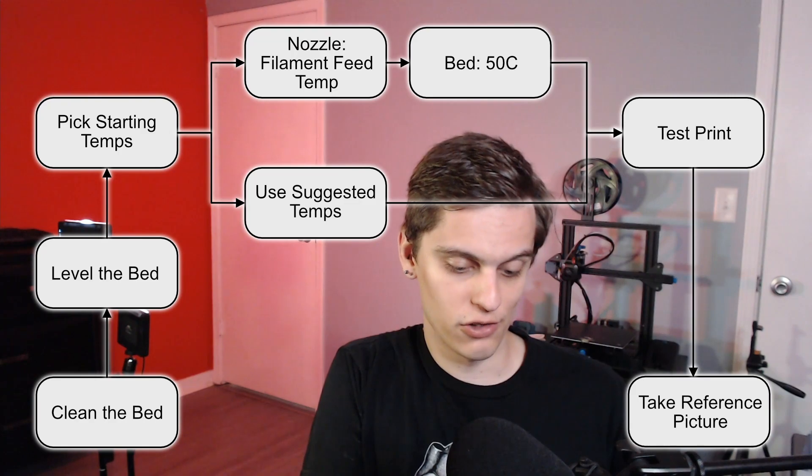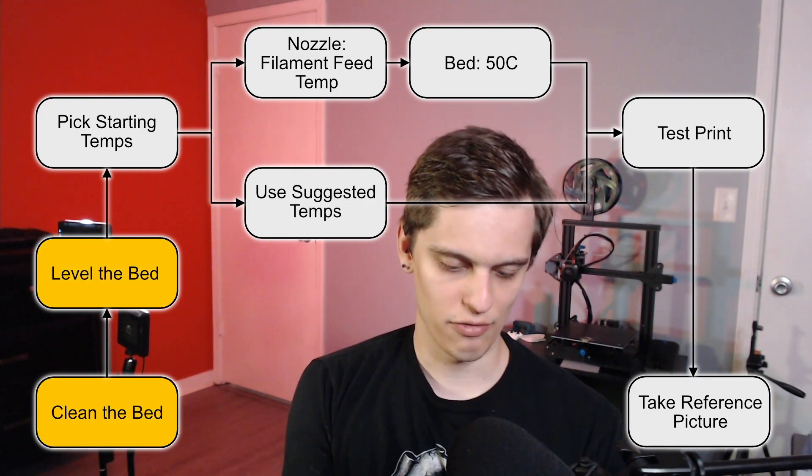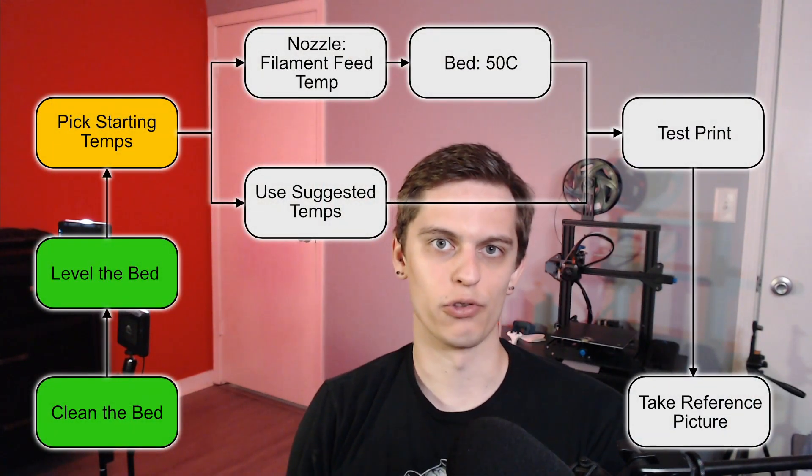With the theory out of the way, let's talk about the process for really dialing in the first layer. This process is divided into two parts: the setup portion and then the part that you're going to continually iterate with. For the setup portion, the first two things that are really important are to clean your bed and level your bed. We said four things matter for bed adhesion - clean bed, level bed, right nozzle temperature, and right bed temperature. And if you have to guess about whether or not your bed is clean or level, that's going to waste a lot of your time.